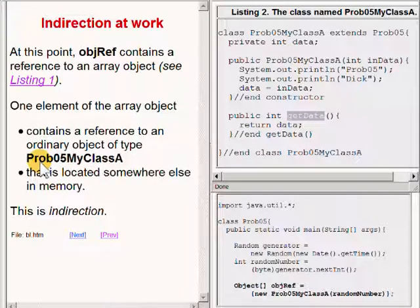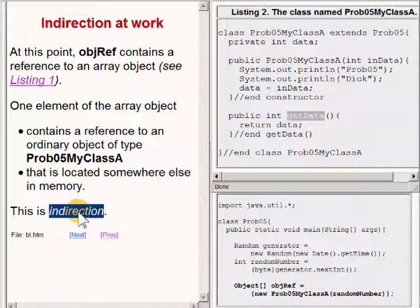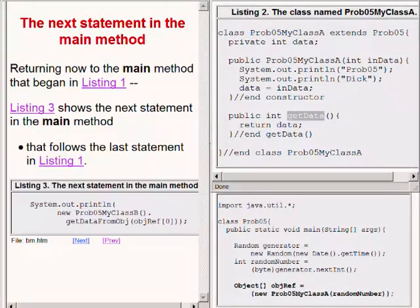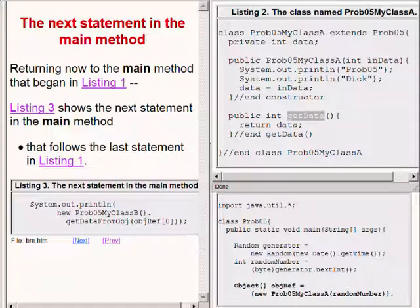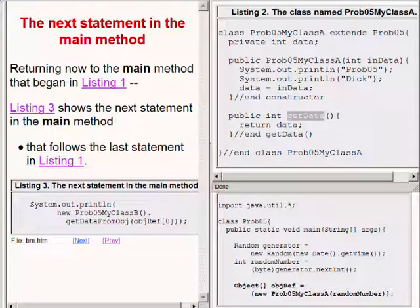That object is located somewhere else in memory. This is what we call indirection. Indirection is a process where one reference points to another reference that points to another reference, and so on and so forth. In the case at hand we have two levels of indirection. The reference in the variable named objref points to an array object, and one element in that array object contains a reference that points to an ordinary object somewhere else in memory.